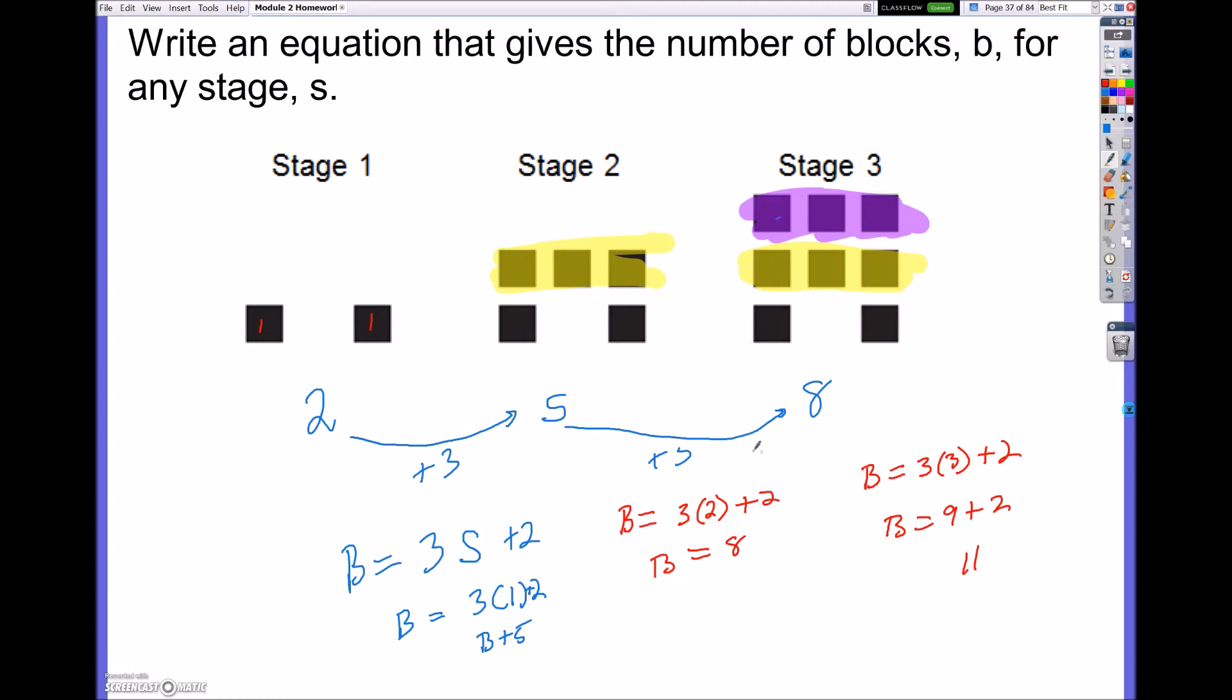So what I want you to realize is the equation that I came up with was B equals 3 blocks per stage plus the 2 additional blocks I started. And every time I was 3 too many. So to get 3 backwards, all I would need to do is minus 3. This would give me a proper equation of B is equal to 3S minus 1. And I got the minus 1 by doing the 2 minus 3.